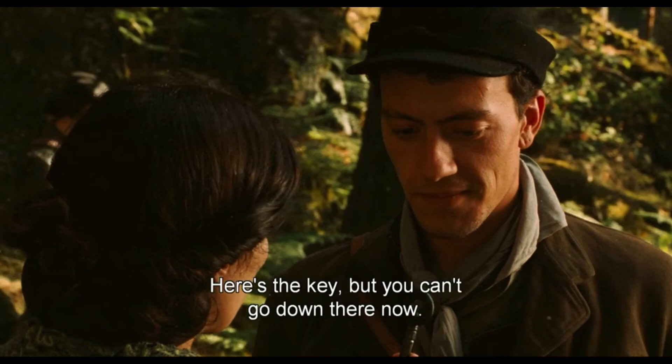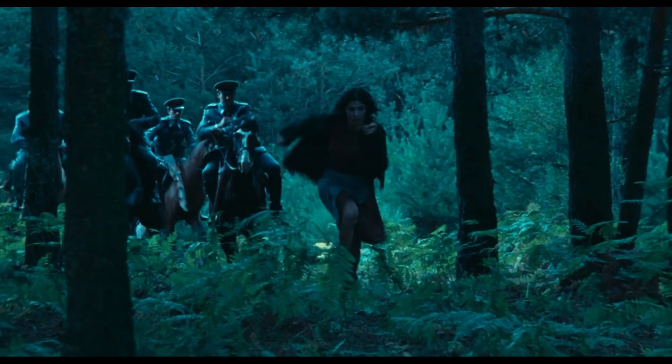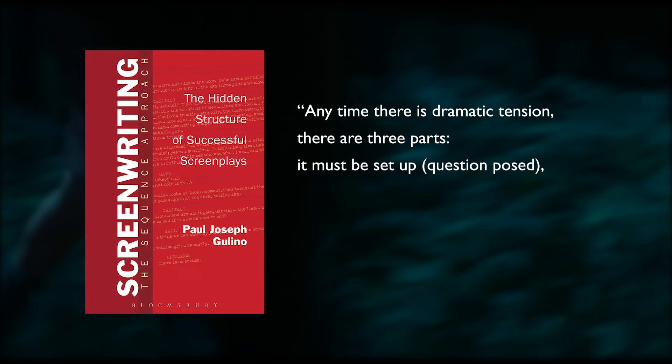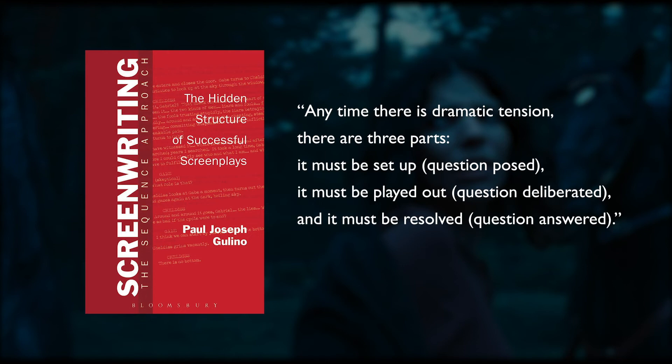And finally, we come to the most powerful tool: dramatic tension. This can simply be described as somebody wants something badly, but an obstacle stands in their way. When this occurs in the story, the audience wants to know if the character will end up achieving that objective. Paul Joseph Galeno writes that anytime there is dramatic tension, there are three parts: it must be set up (question posed), it must be played out (question deliberated), and it must be resolved (question answered). Let's see how this mini story structure applies to sequences of dramatic tension in the movie.